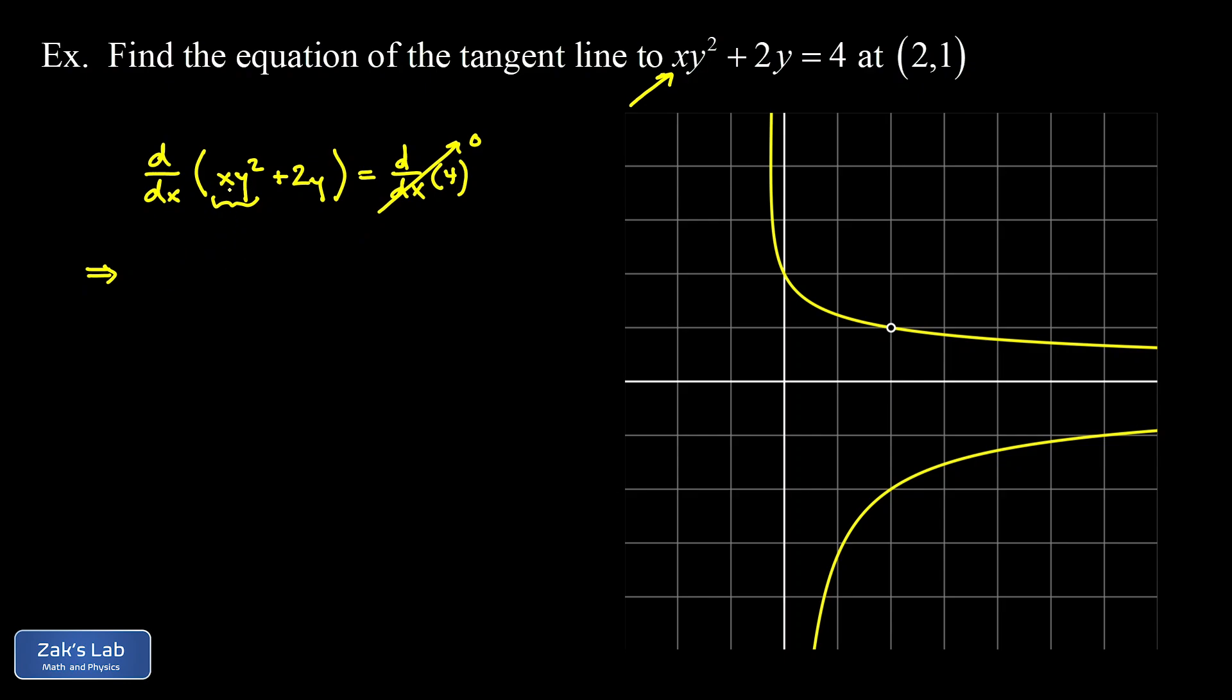So in my first term I take the derivative of the x which is just 1 times the y² left alone. And then in my second term I leave the x alone and multiply by the derivative of y² with respect to x.